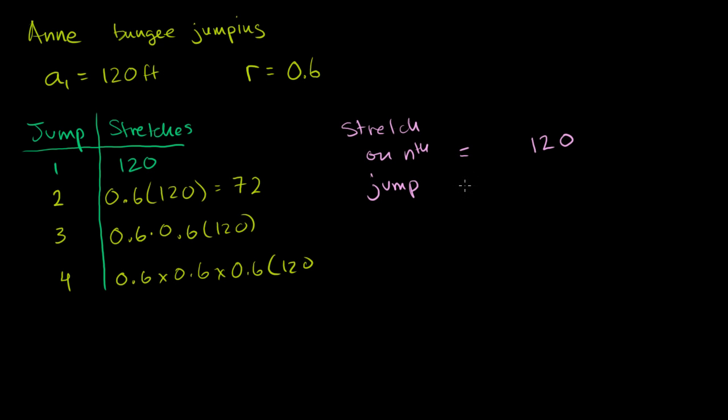So let's see, we start at 120 times 0.6, let me do the 0.6 here, times 0.6 to the what? To the n minus 1. Now how did I get this? Let me write this a little bit neater. So this is equal to 120 times 0.6 to the n minus 1. How did I get that?